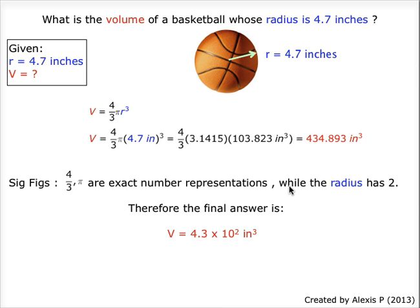Therefore, our final result will require two significant figures, since exact numbers 4 over 3 and pi do not affect the final significant figure form, giving us V equals 4.3 times 10 to the second inches cubed.